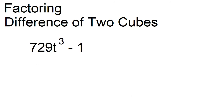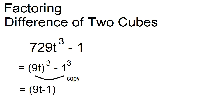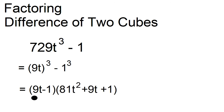Factor 729t cubed minus 1. This can be written as the cube of the quantity 9t minus 1. The factors are 9t minus 1 and 81t squared plus 9t plus 1.